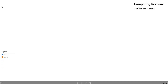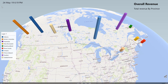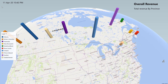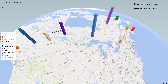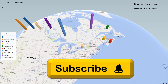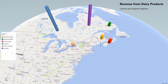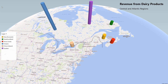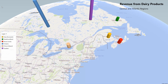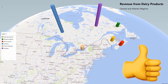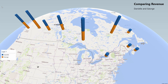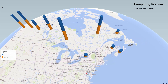I close the Scene Options panel and click Play Tour to preview how it looks. This is our first scene showing revenue changes by quarter. Then it transitions to the second scene comparing dairy product revenue between the Central and Atlantic regions, and then moves to the third scene.